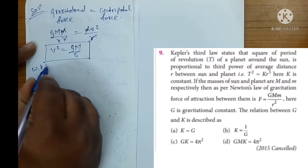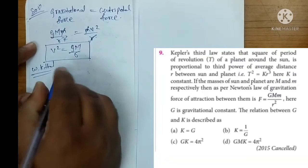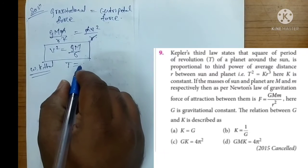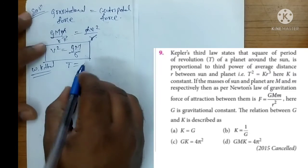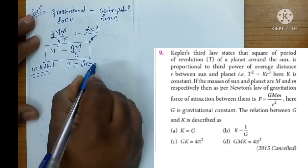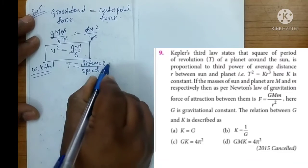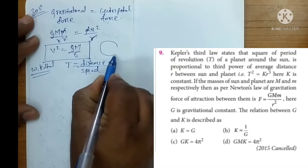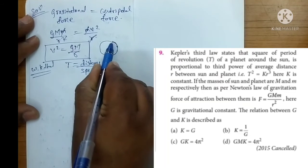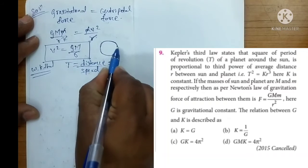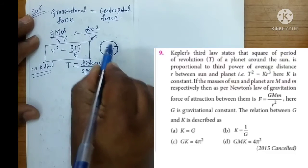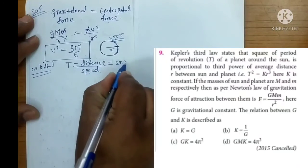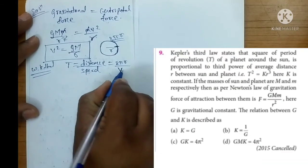We know that time period - how do we calculate? Time period is equal to distance upon speed. So time is equal to distance upon speed. A planet completing one complete revolution covers how much distance? Yes, very good. Circumference of the circle, that is 2πr. Speed is v.